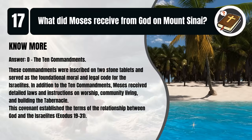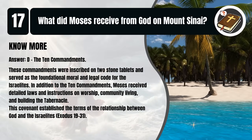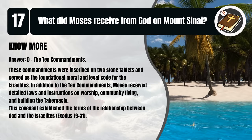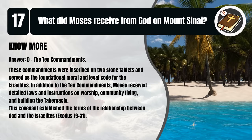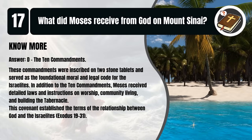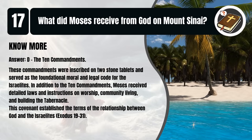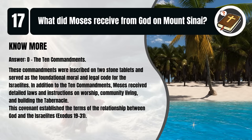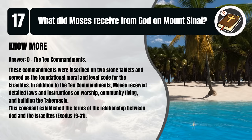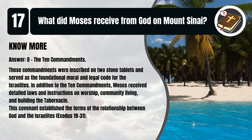That's D. The Ten Commandments. These commandments were inscribed on two stone tablets and served as the foundational moral and legal code for the Israelites. In addition to the Ten Commandments, Moses received detailed laws and instructions on worship, community living, and building the tabernacle. This covenant established the terms of the relationship between God and the Israelites. Exodus chapters 19-31.